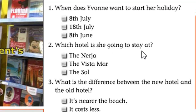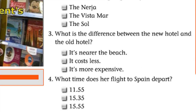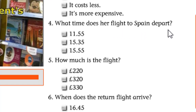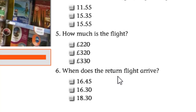Which hotel is she going to stay at? Mira, Vista Mar, or Seoul? What is the difference between the new hotel and the old hotel? It's nearer the beach, it costs less, or it's more expensive. What time does her flight to Spain depart? 11:55, 15:35, or 15:55? How much is the flight? £220, £320, or £330? When does the return flight arrive? 16:45, 16:30, or 18:30.